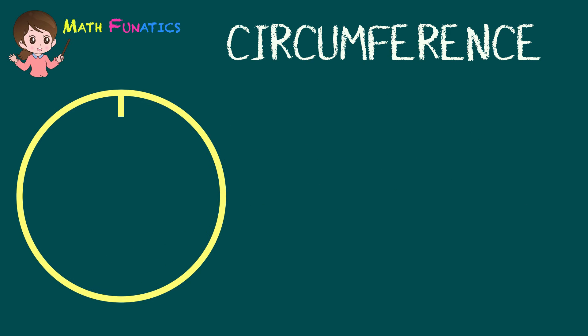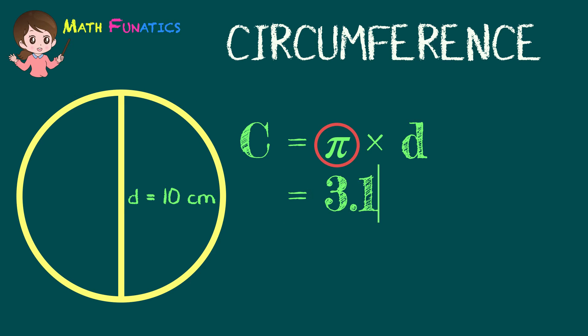Let's have an example. Let us compute for the circumference of a circle if its diameter is equal to 10 centimeters. So we use the formula C equals pi times D. Simply substitute pi by 3.14 and D by 10 centimeters.